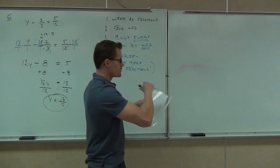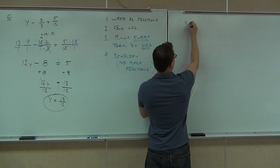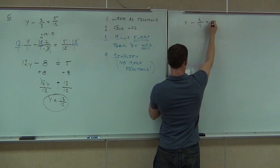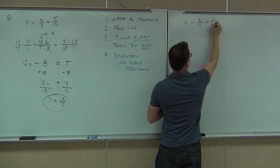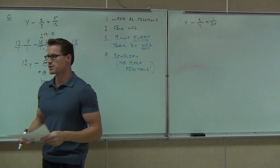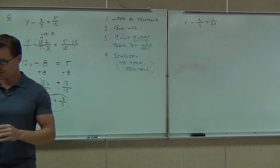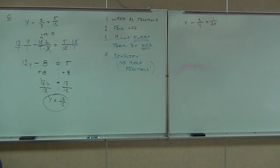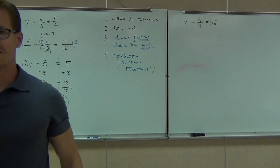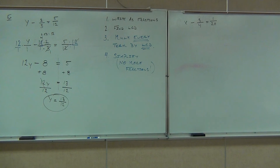Let's try a similar problem: x minus 3-fourths equals 1-twentieth. Write everything as a fraction first — put x over 1. Find your LCD and multiply every single term by the LCD. That's going to get rid of your fractions.